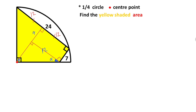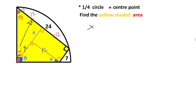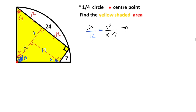Let's call this angle alpha and this angle theta. Notice that alpha plus theta equals 90 degrees. So this angle must equal alpha and this angle must equal theta. Notice that this triangle and this triangle are similar because they have the same angles. Let's call this side x. Therefore, x — which is opposite to alpha — over 12, which is opposite to alpha, equals 12 over the side opposite to theta.